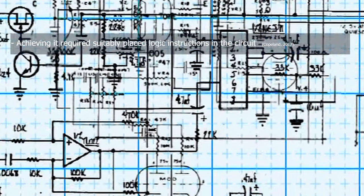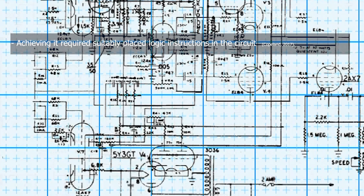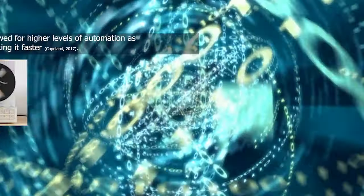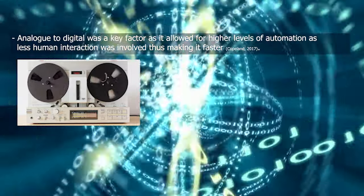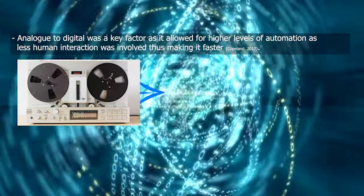Although the stored program concept is important, achieving it required a suitably placed logic instruction in the circuit, meaning mathematics and logic are still involved. It can be argued that the change from analogue to digital was a key factor, as it allowed for higher levels of automation with less human interaction, thus making it faster.